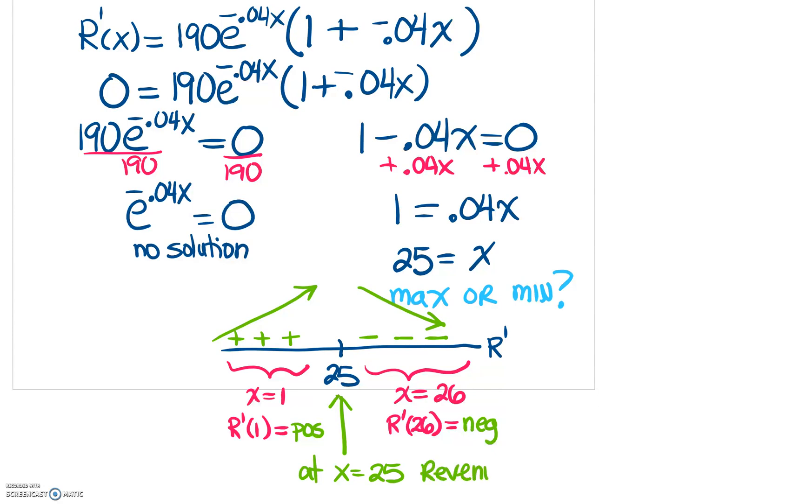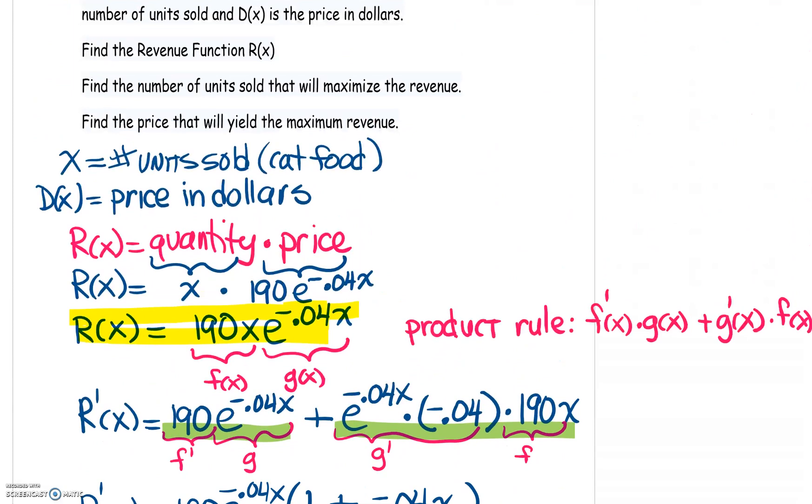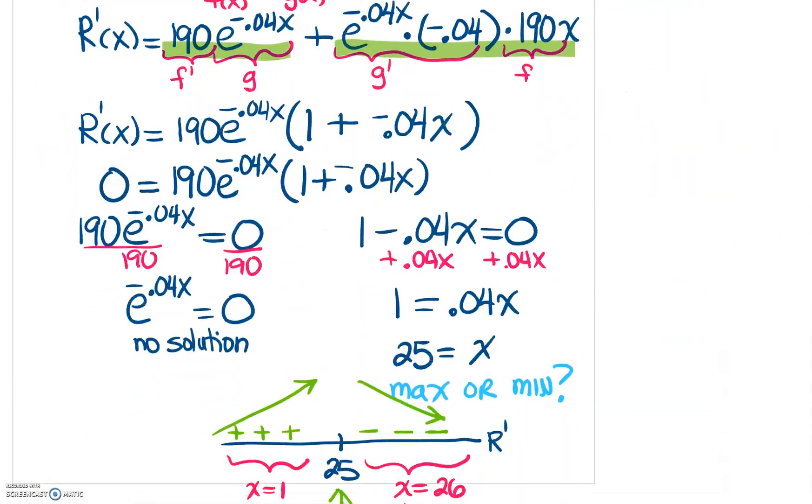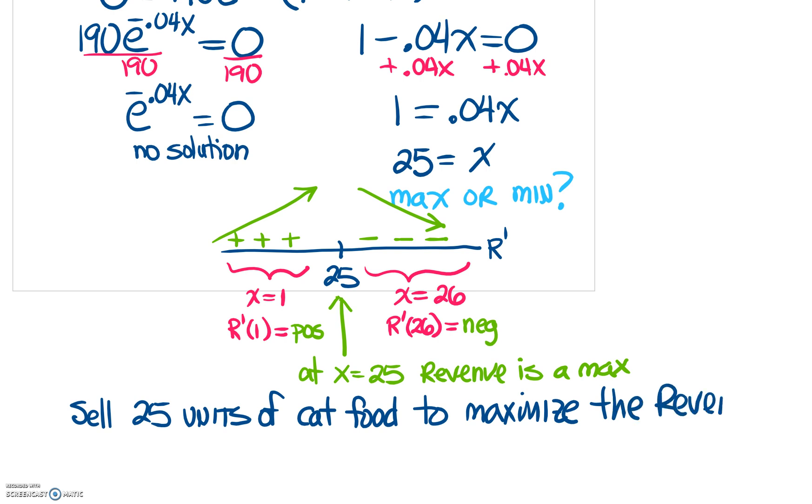So the revenue is a max when X is 25. Now, I believe that was the second question. Let me scroll back up here to the actual question that we have. So it says, find the number of units sold that will maximize the revenue. So that's going to be the answer to the second part. So what we're going to do is we're going to answer that. We're going to say, sell 25 units of cat food to maximize the revenue. So we've got two out of three done.